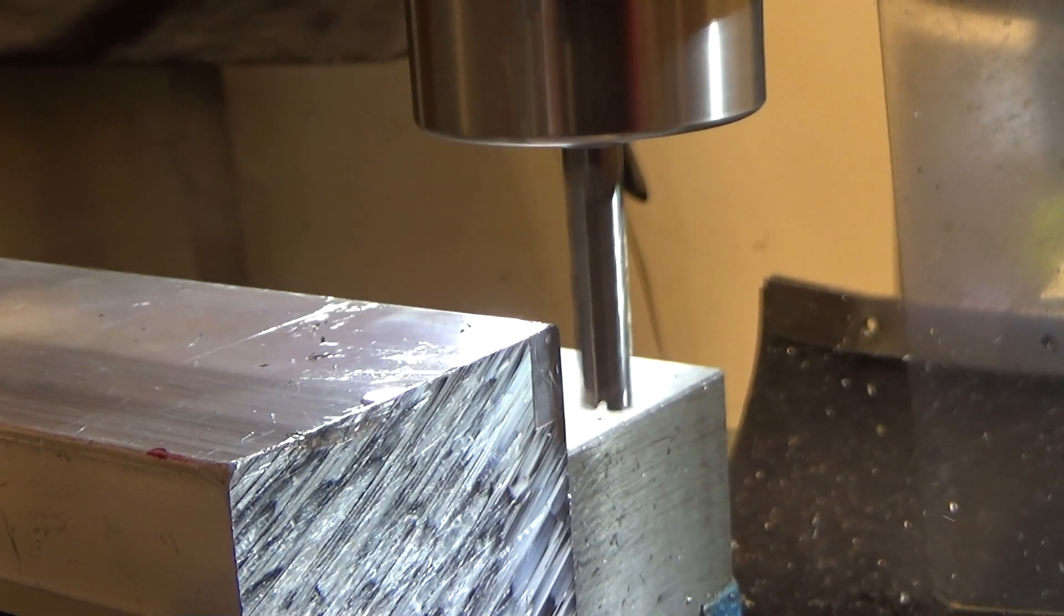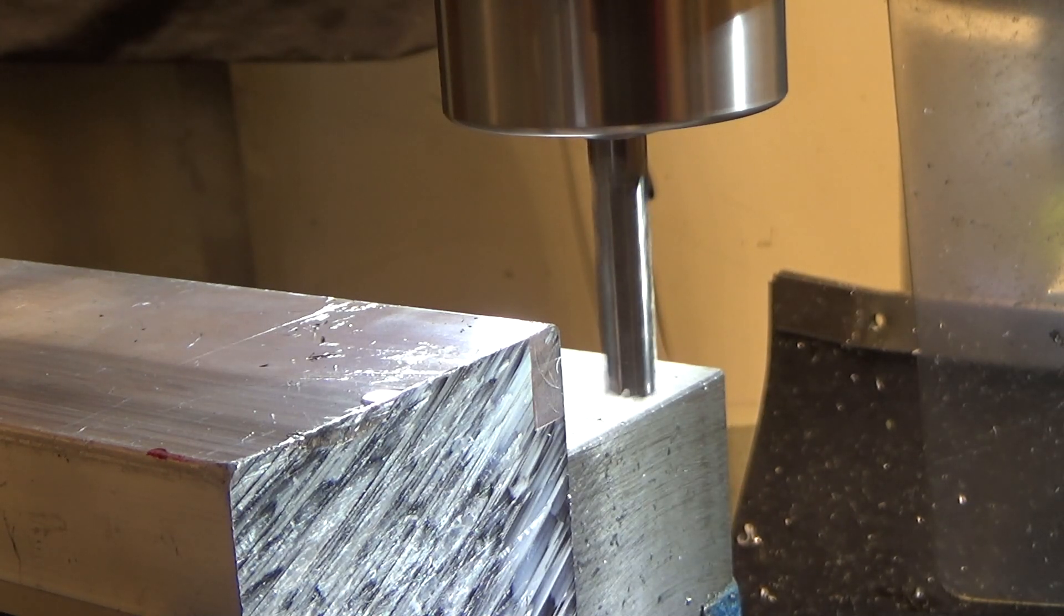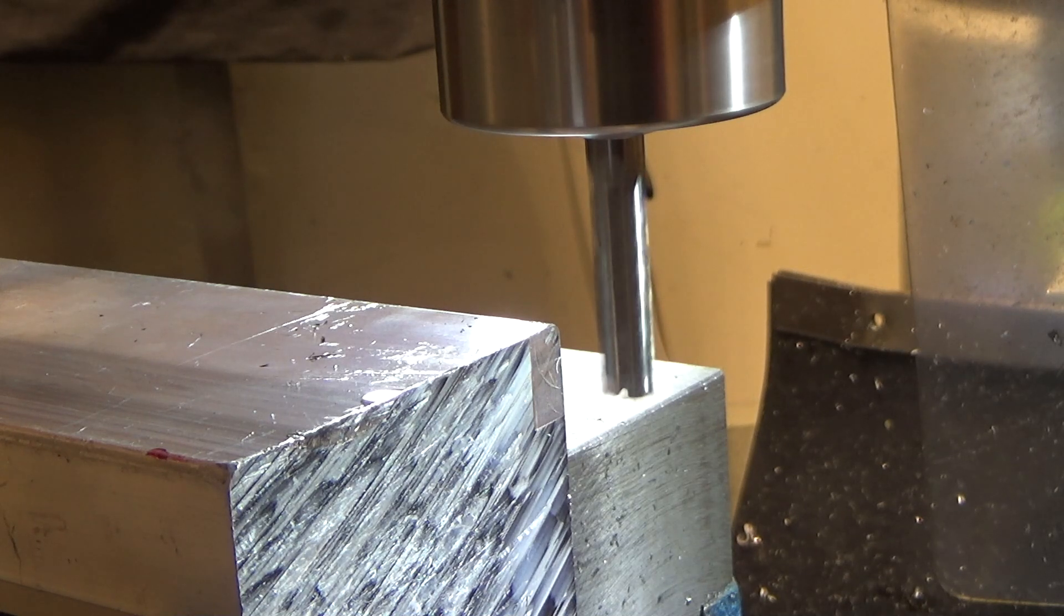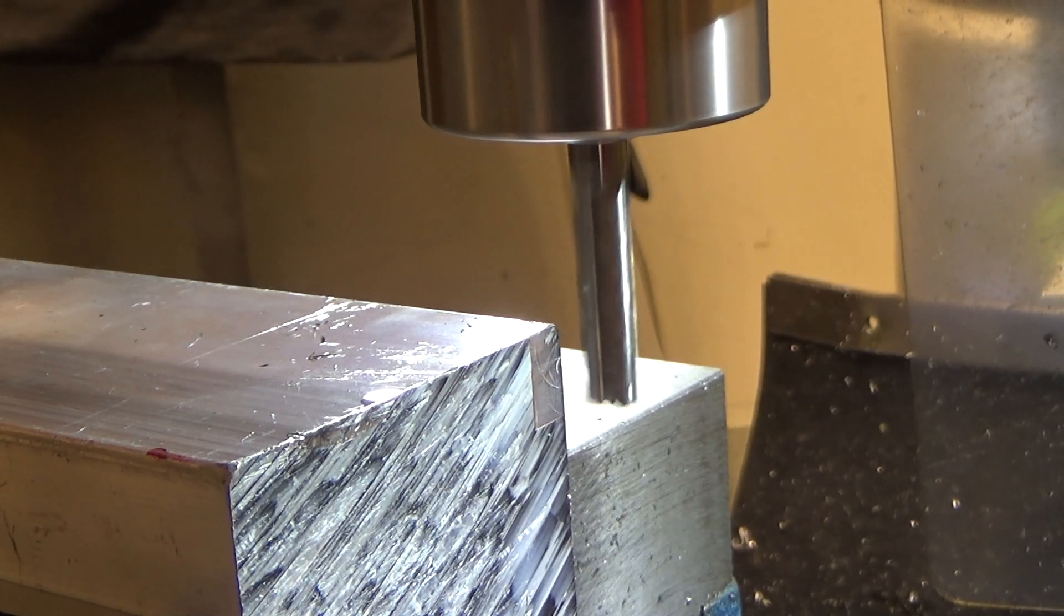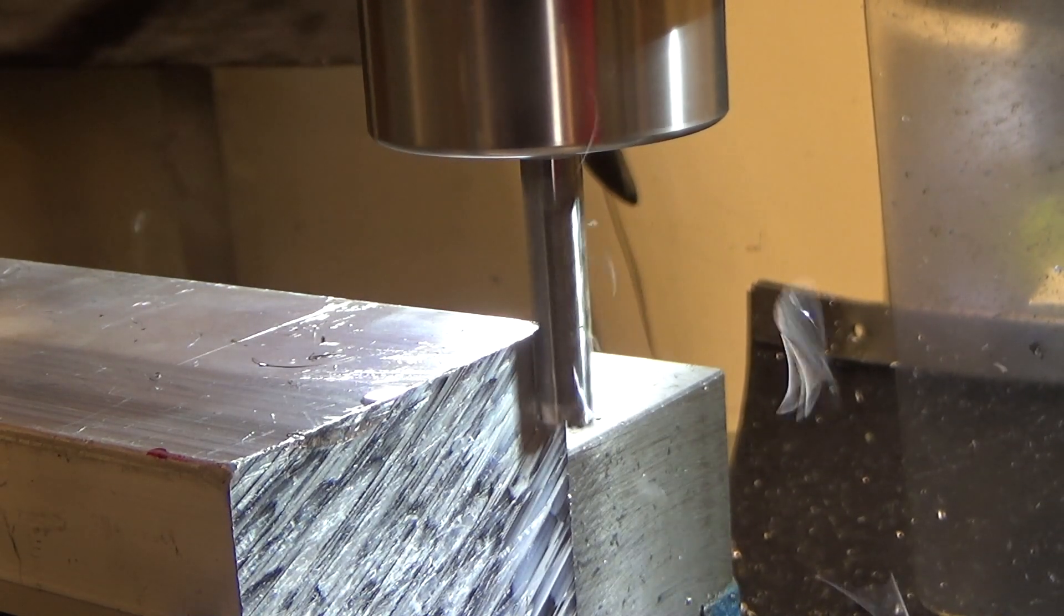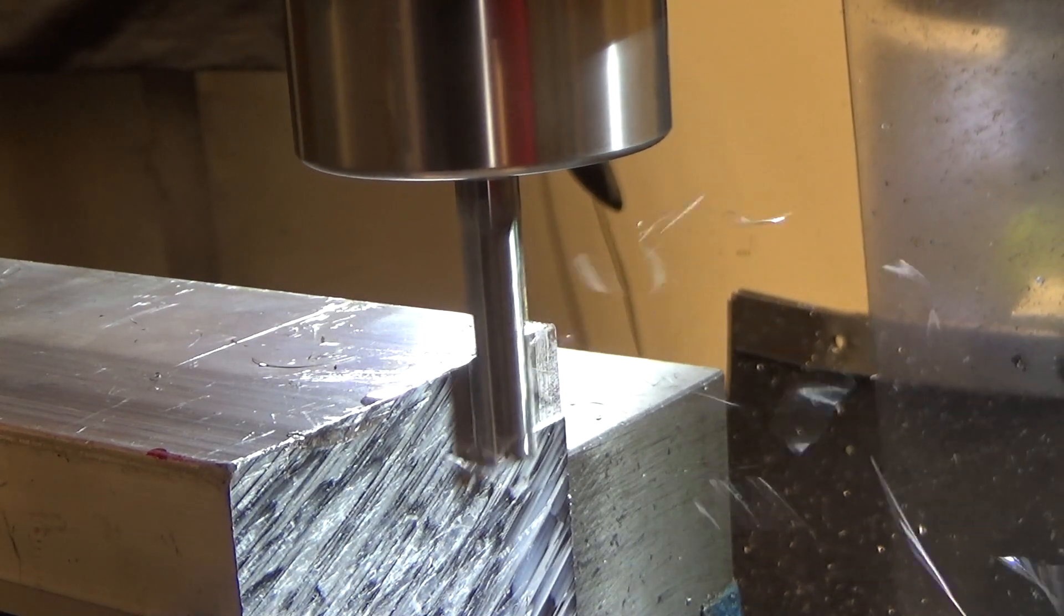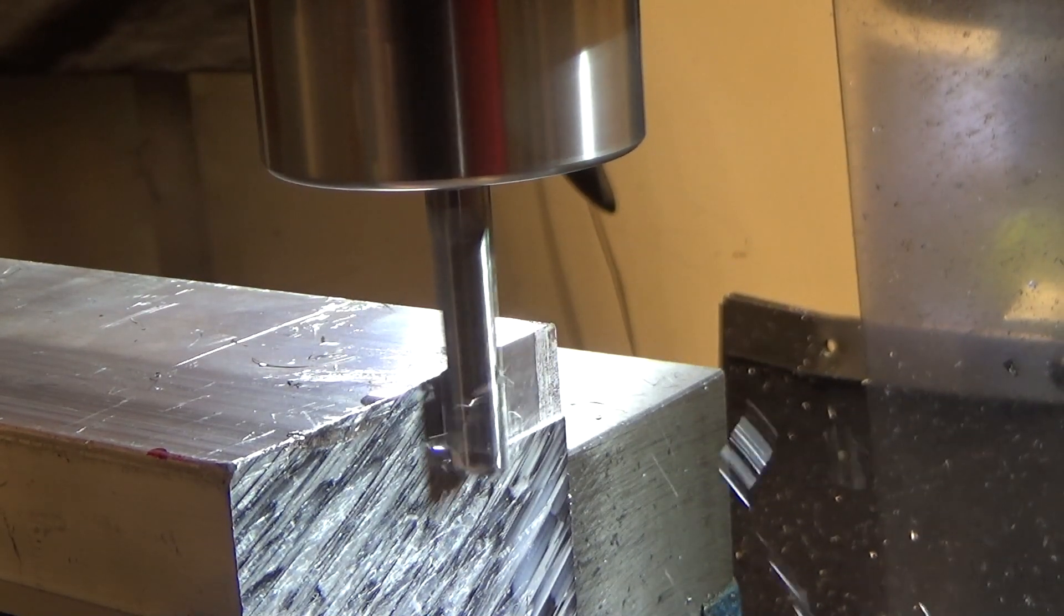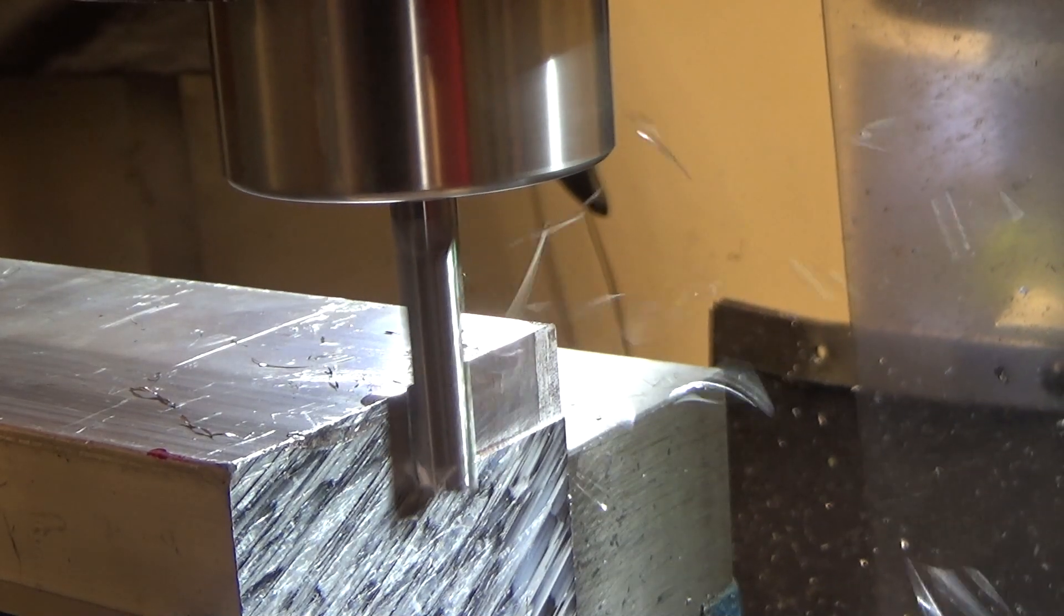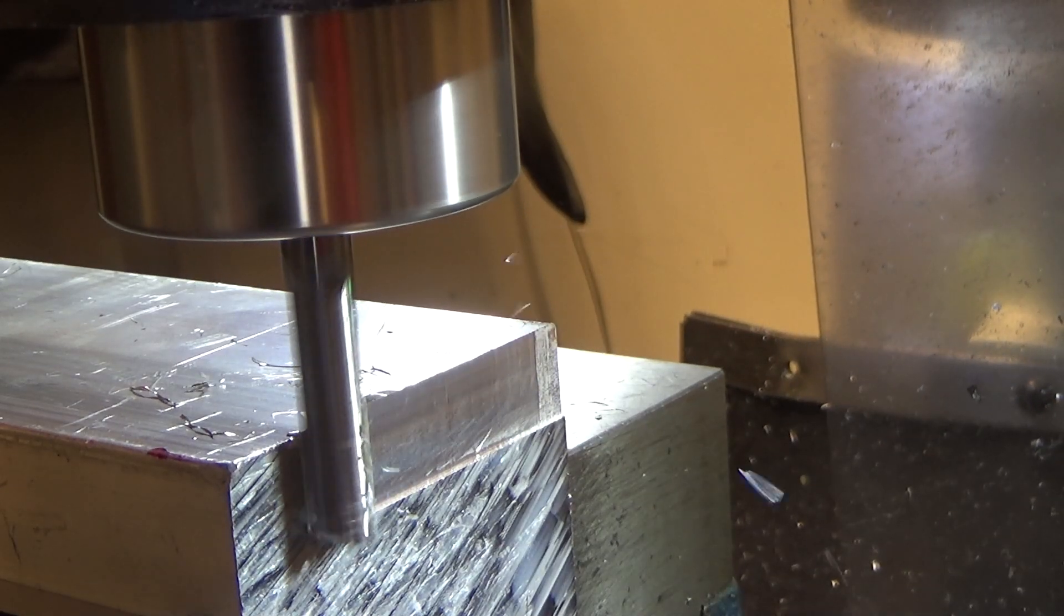Okay, come back and we will do 25 thousandths, half an inch. So because it's uncoated carbide, we do have to concern ourselves with the possibility of welding, so we don't want to push it too fast.